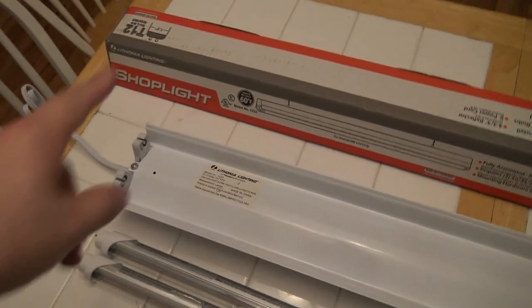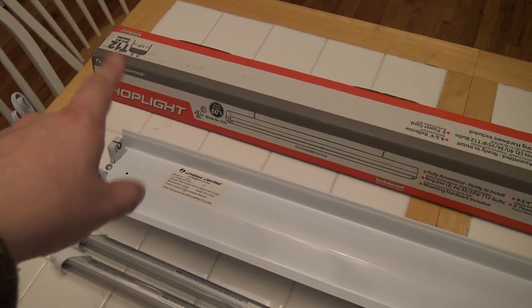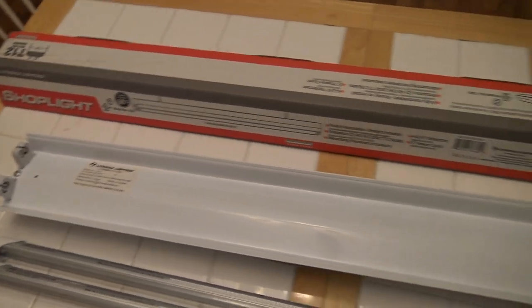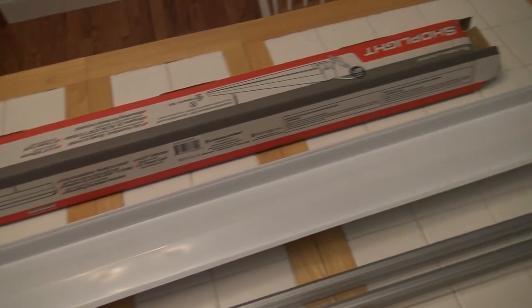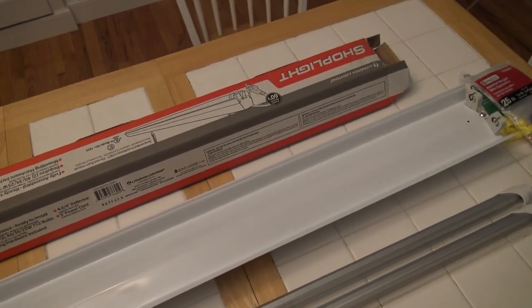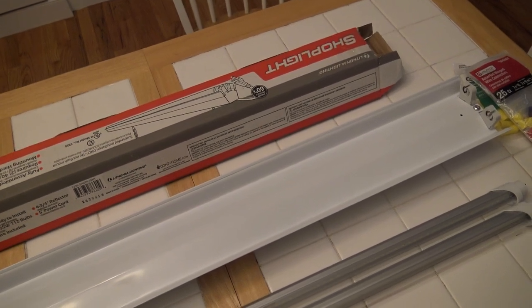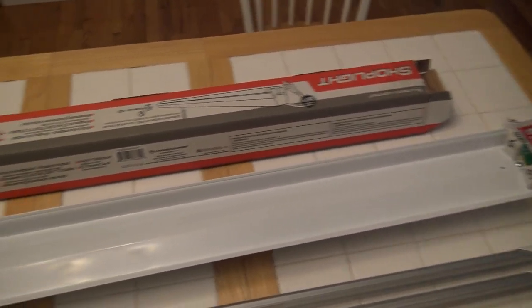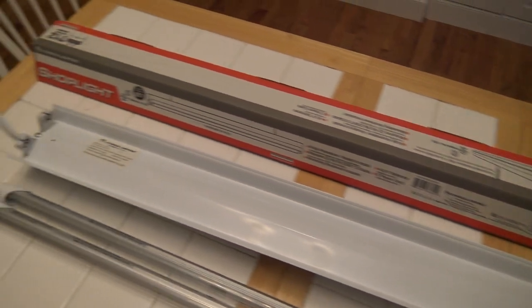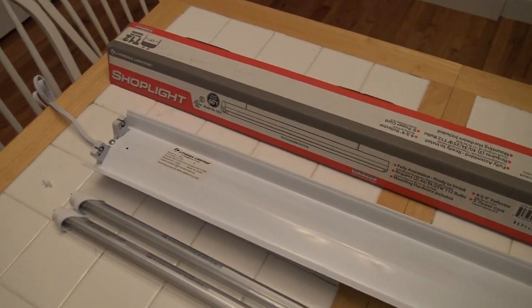The reason I went with the T12 shop light is because it's super, super cheap. Basically, no one uses T12 bulbs anymore. And because we're ripping the ballast out, we don't really care what kind of electronics or what kind of hardware is inside of this because we're just going to rip it out anyways. So I just went for the cheapest thing I could possibly find. That happens to be it.